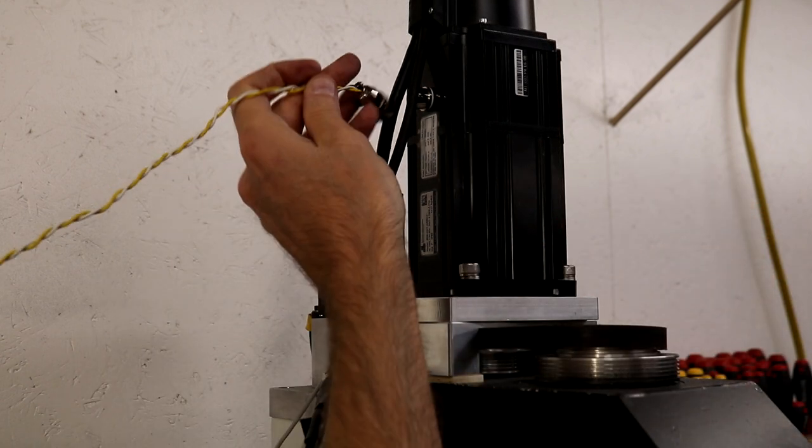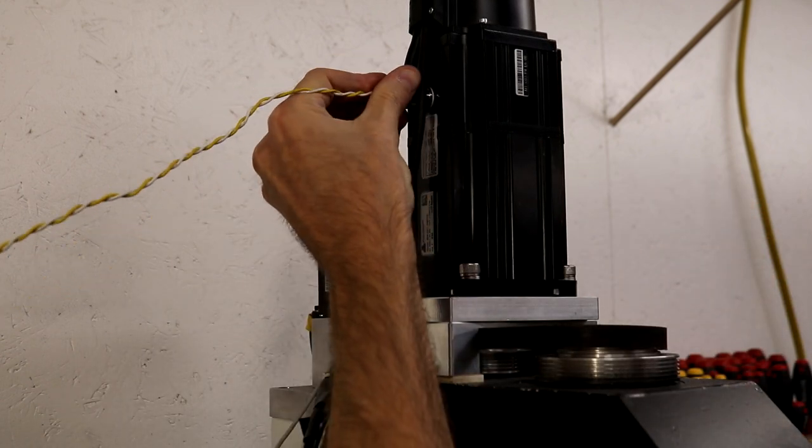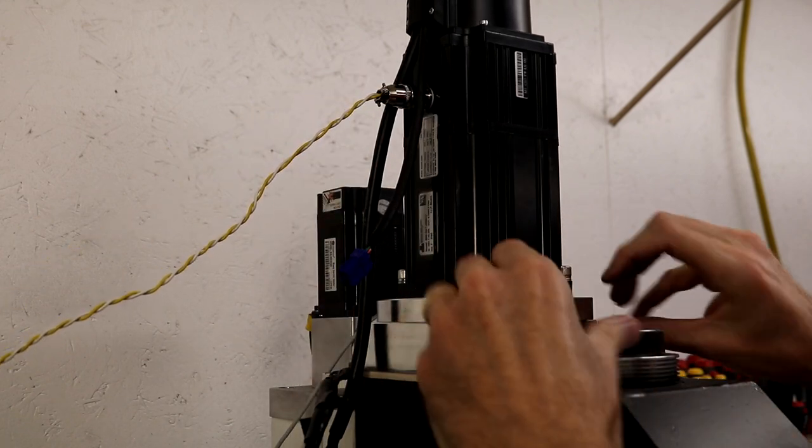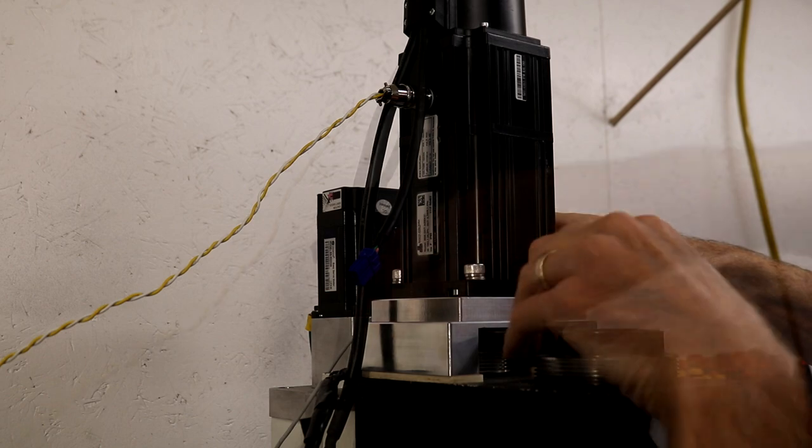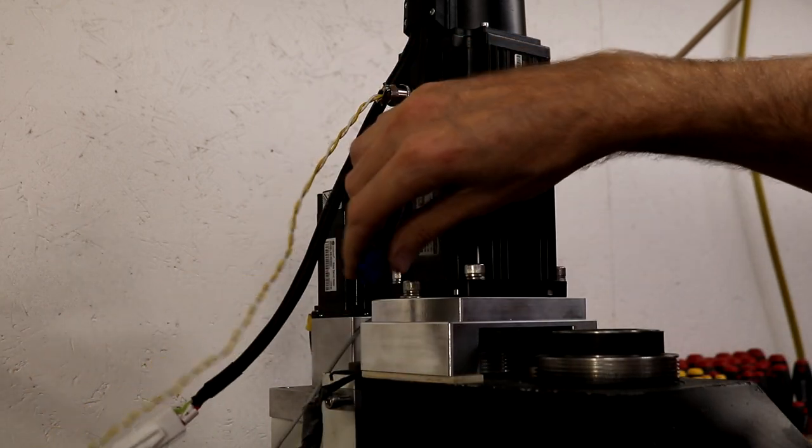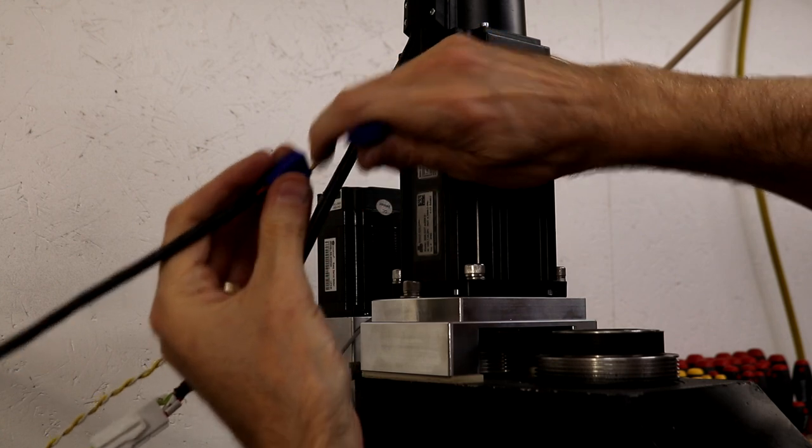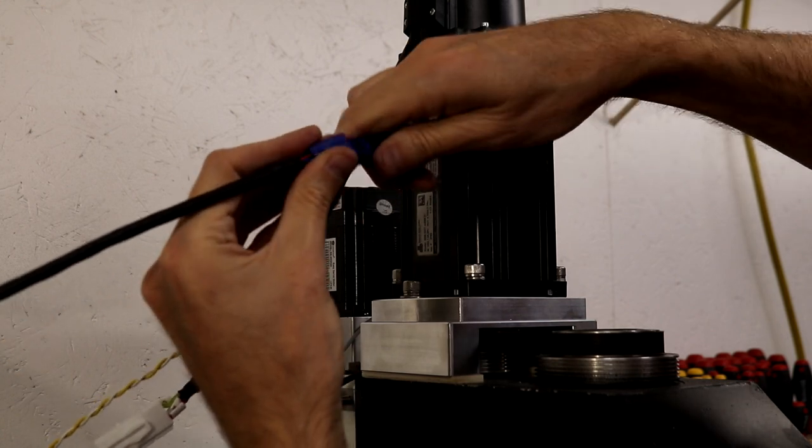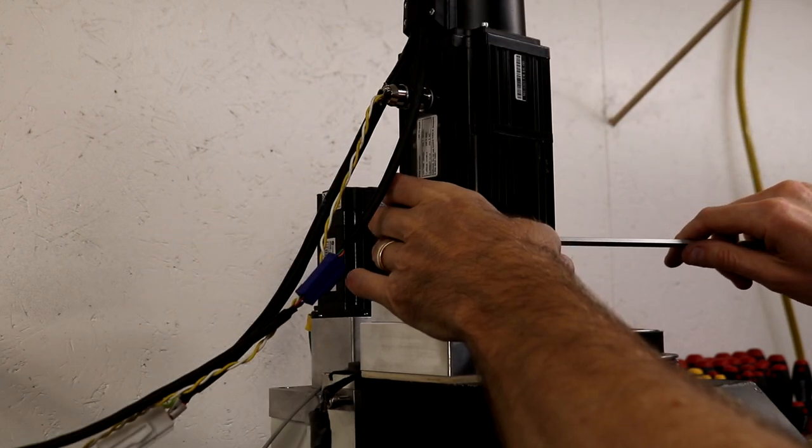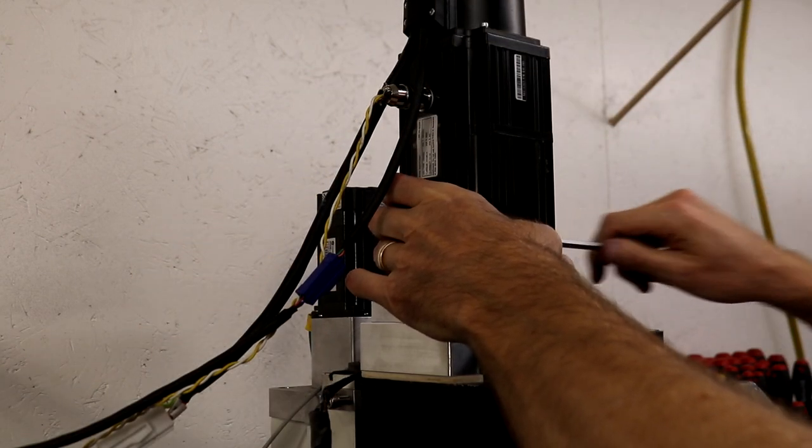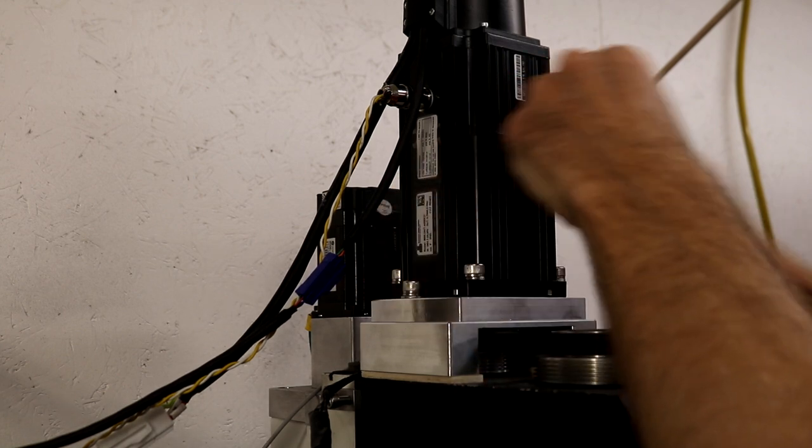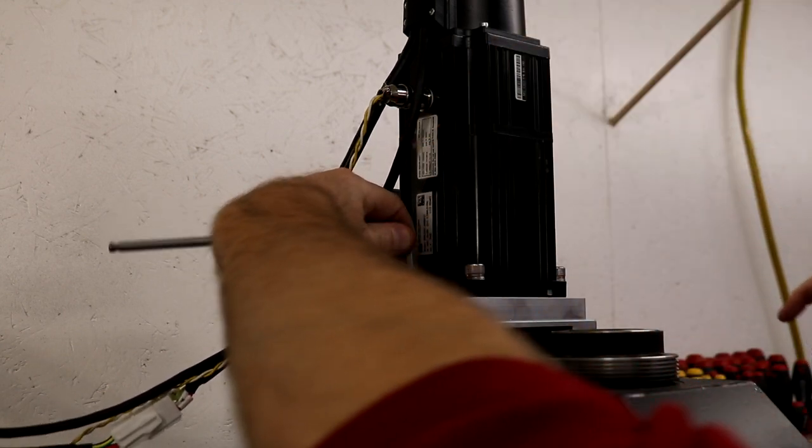The servo motor has an optional brake, and power must be supplied to the brake before the motor will turn freely. The servo is still sensitive to bolt torque, but the tweaks helped a lot.